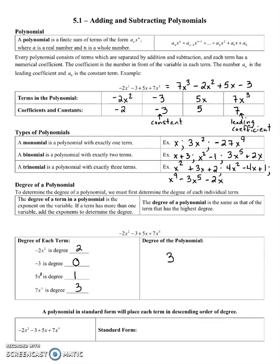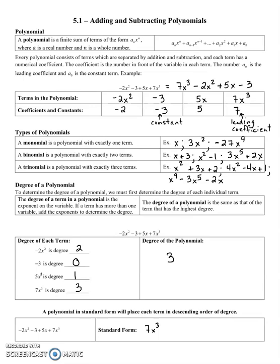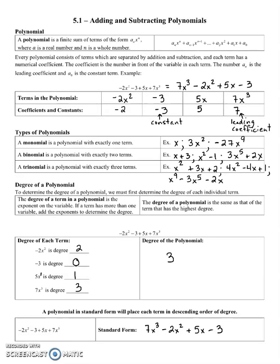A polynomial is in standard form when each term is written in descending order of degree. We start with the highest power of x, which is 3 in this case: 7x cubed, then minus 2x squared, then plus 5x, then minus 3. Now it's in standard form.